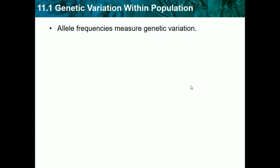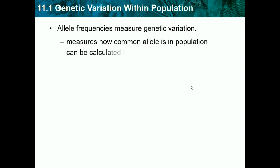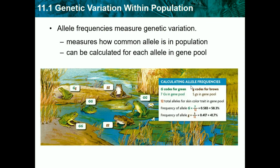Allele frequencies measure genetic variation. They measure how common an allele is in a population and can be calculated for each allele in a gene pool. For example, looking at allele frequencies between brown and green frogs: the frequency for the green allele is 58.3, and for the brown allele it's 41.7 — showing variation.